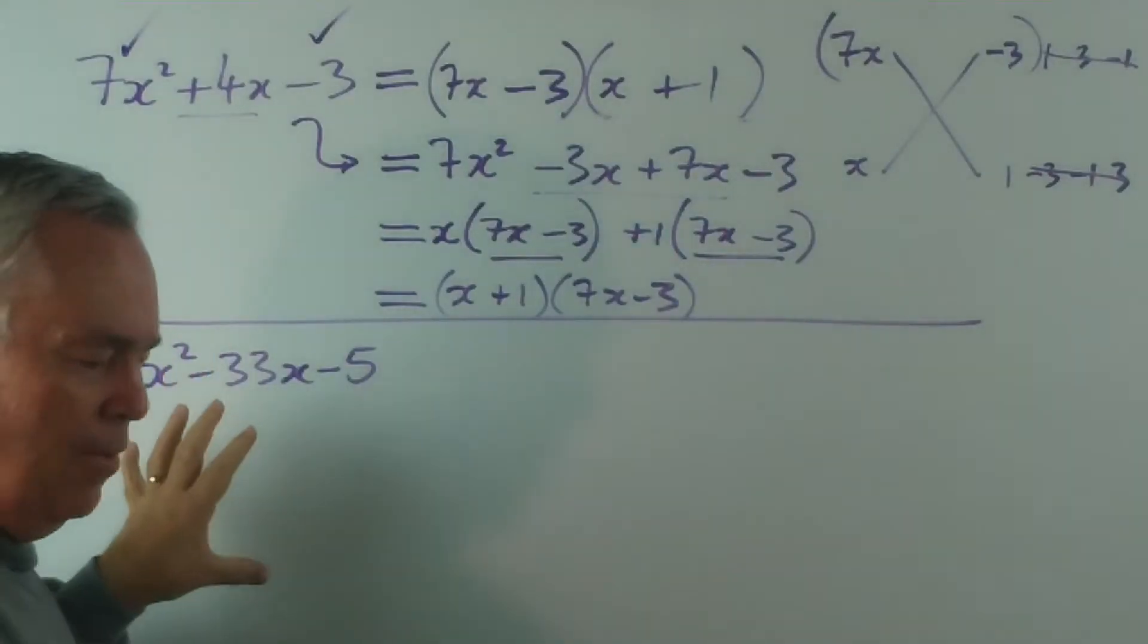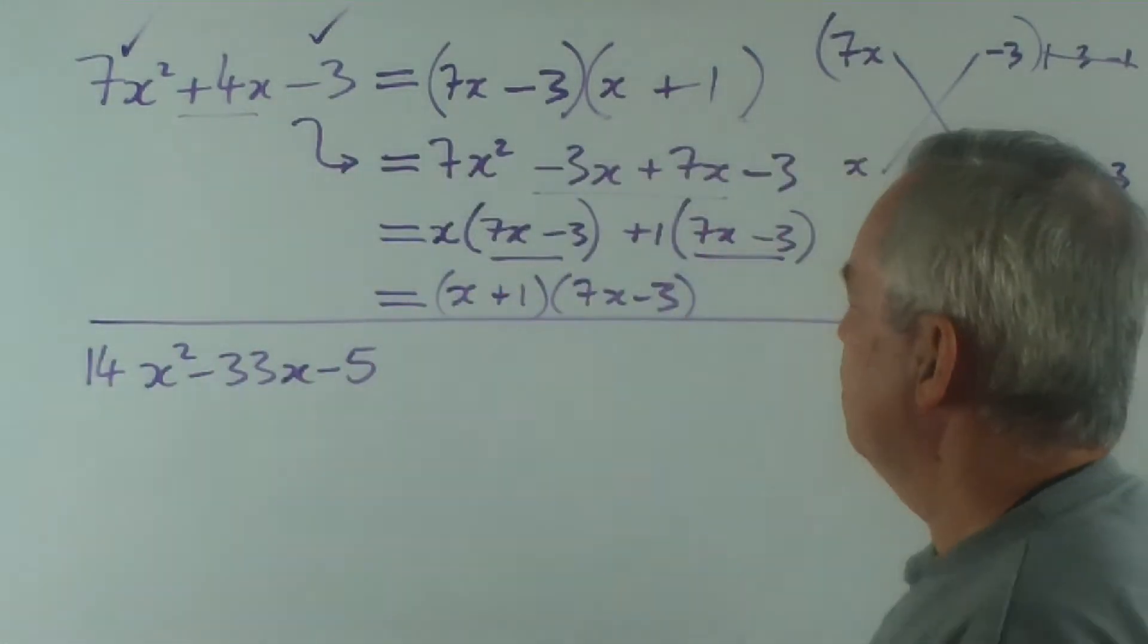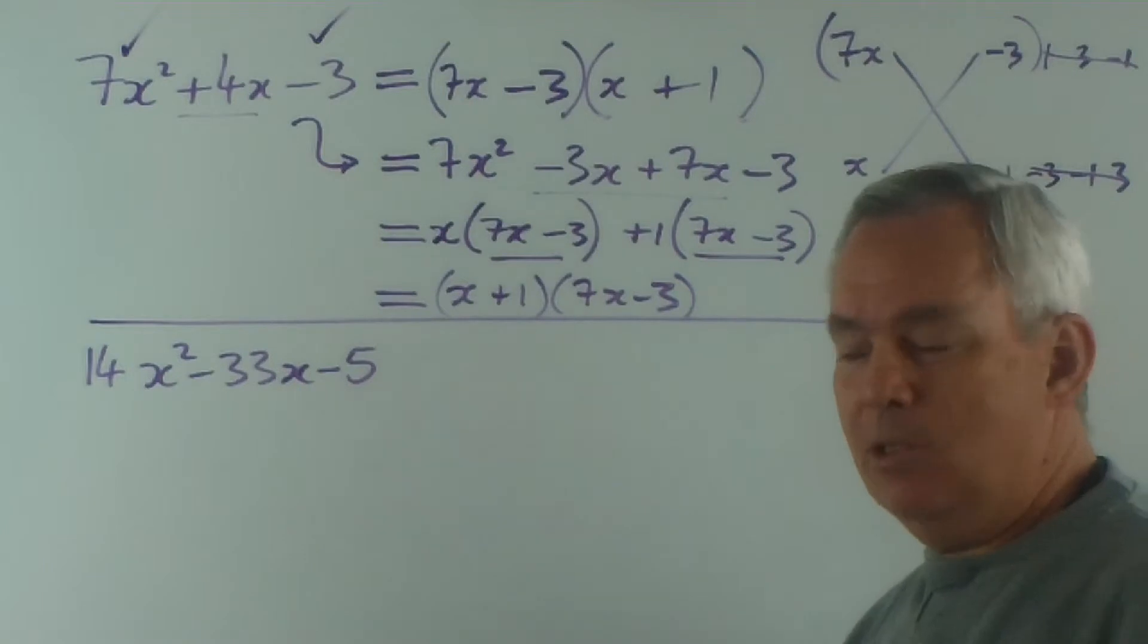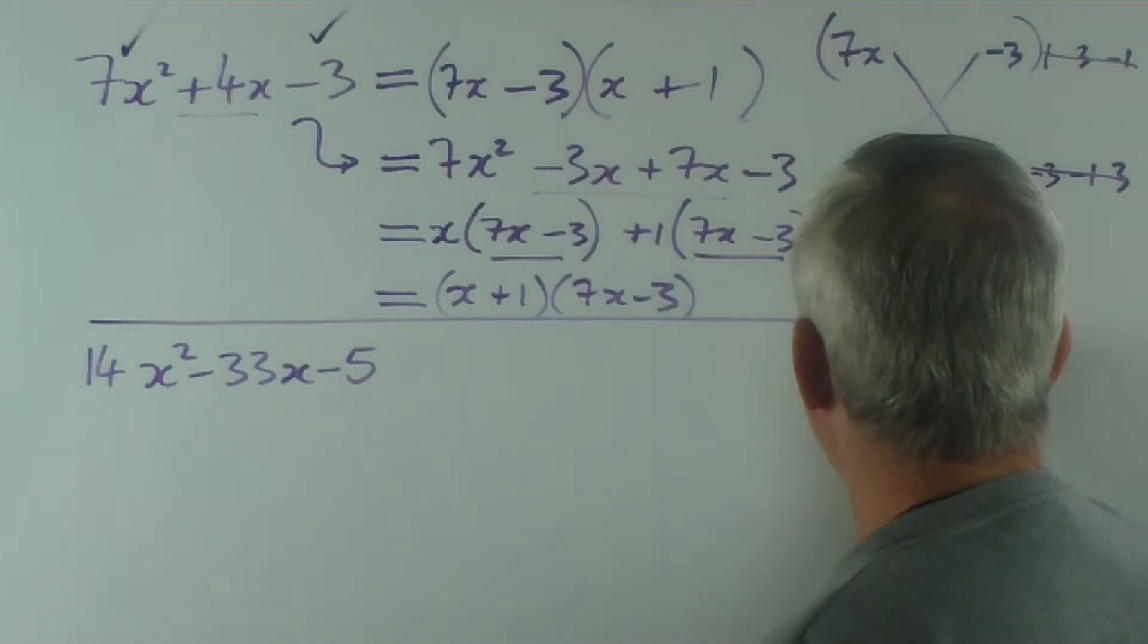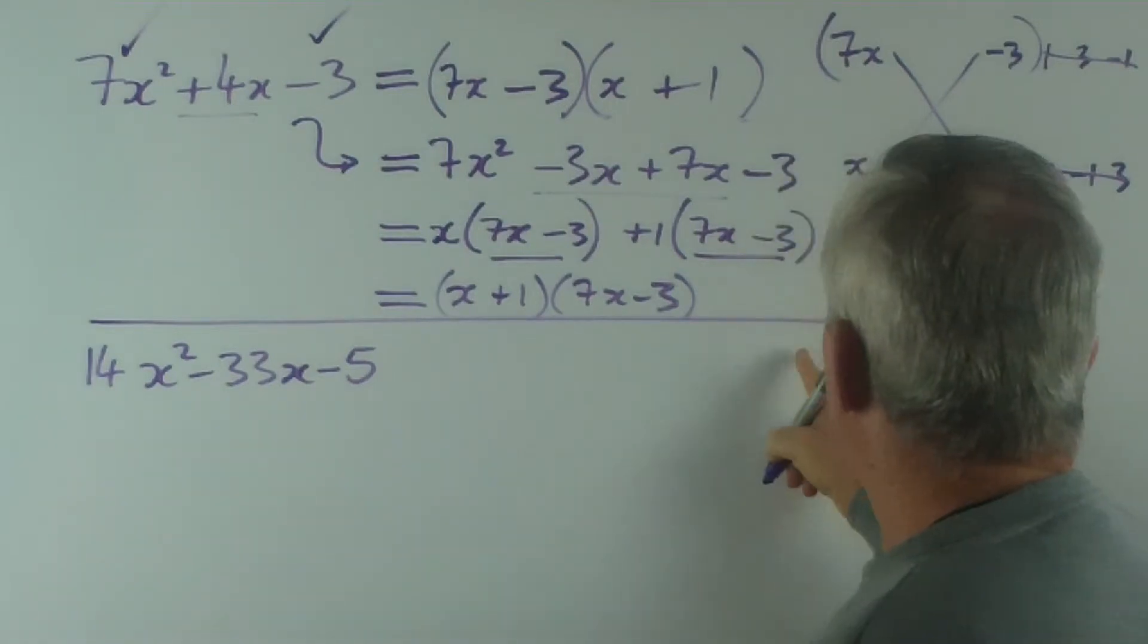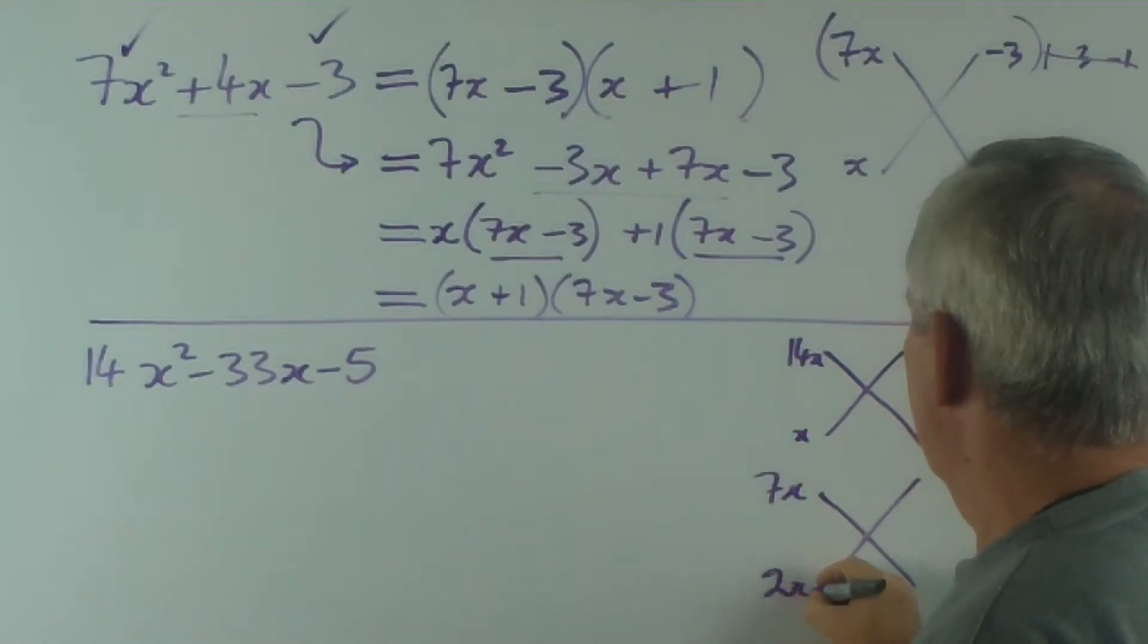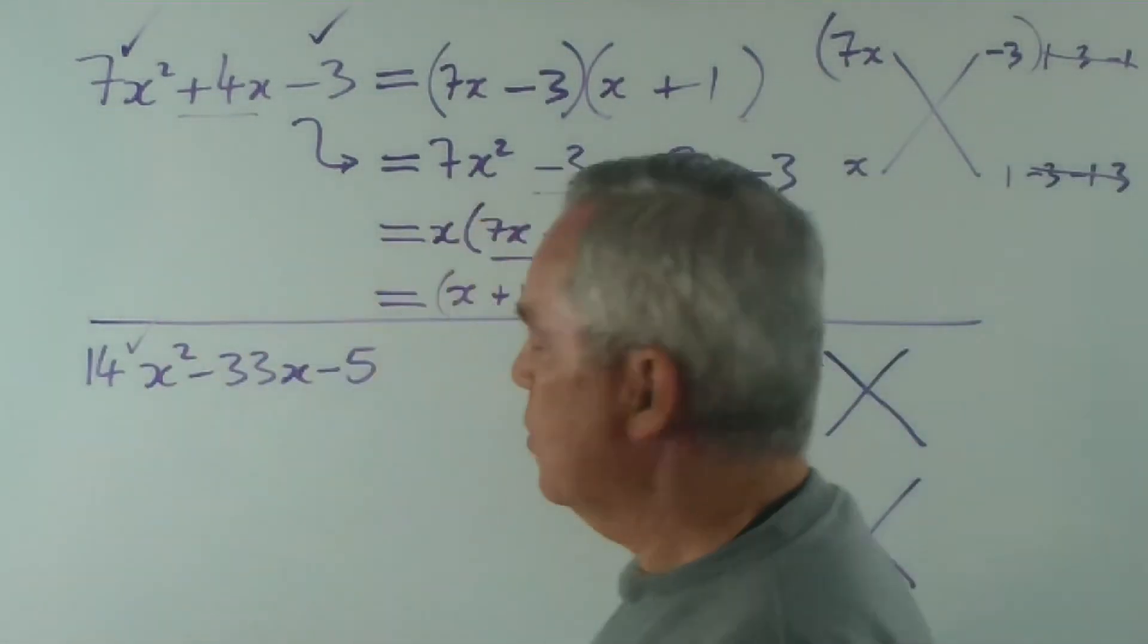Now, let's look at this one. We're talking the cross method. And here's where the cross method becomes even more tedious and difficult. To get our 14x squared, we actually have two combinations. Because 14 is a composite number. And because of that, we have to create a cross for each composite. So, I have to create a cross for 14x times x and another one for 7x times 2x. Because I'm not sure which combination is going to work.